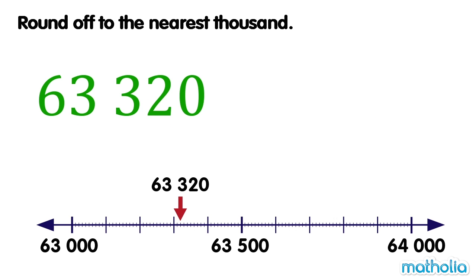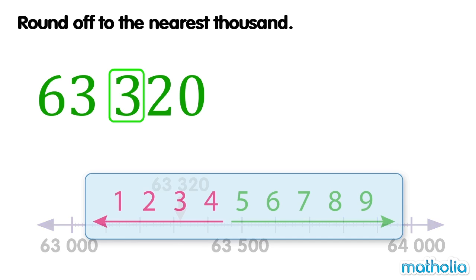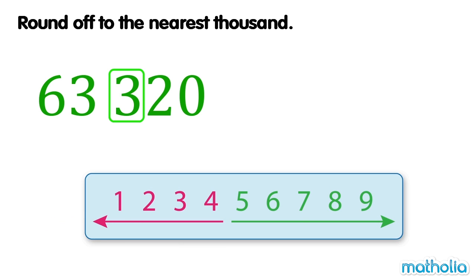Let's round off 63,320 to the nearest thousand. When rounding to the nearest thousand, we look at the digit in the hundreds place. The digit in the hundreds place is 3. Digits that are 4 or less are rounded down.